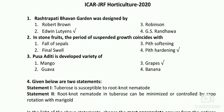In stone fruits, the period of suspended growth coincides with pit hardening — the right answer is the fourth option, pit hardening. In stone fruits, the first slow growth period involves lignification of the endocarp, which leads to pit hardening. So the right answer is pit hardening.